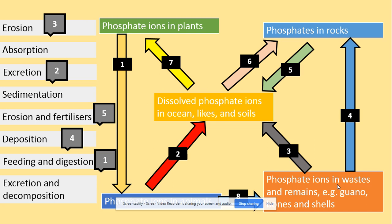From the ocean and lakes we can get dissolved phosphate into rocks as well, and the process of this is called sedimentation. Coming back to the dissolved phosphate ions in the ocean and lakes, we can then get those into plants by the process of absorption.